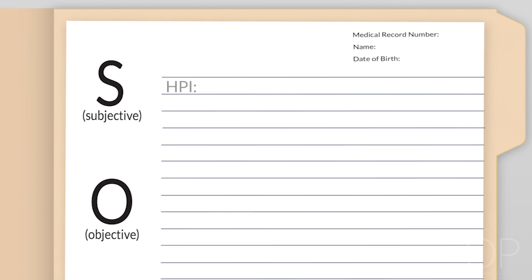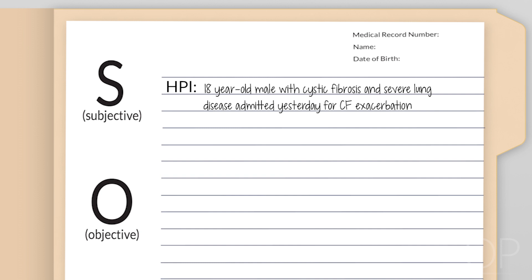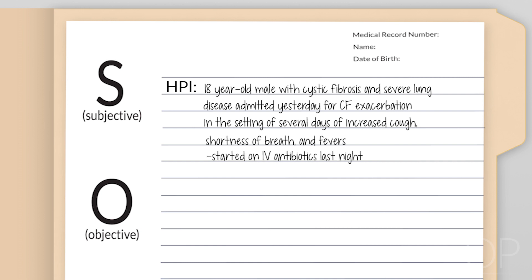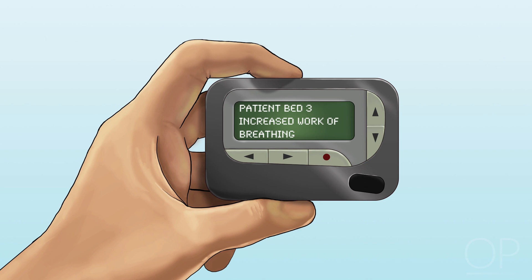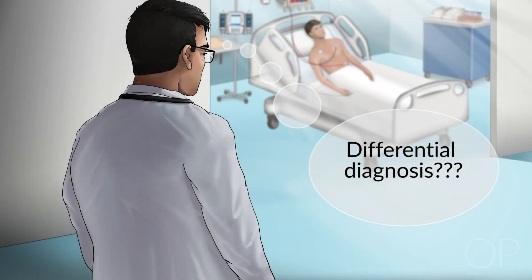You are taking care of an 18-year-old male with cystic fibrosis and severe lung disease who was admitted yesterday for a cystic fibrosis exacerbation in the setting of several days of increased cough, shortness of breath, and fevers. He was started on IV antibiotics last night. It is 5 a.m. and you have just gone to the call room to lie down when the nurse pages you that the patient is having increased work of breathing and is now requiring 2 liters of supplemental oxygen to maintain his oxygen saturations above 92%. What is the differential diagnosis for a CF patient with respiratory distress?